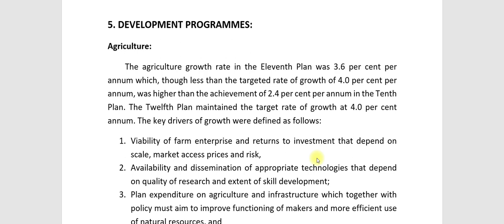Second: availability and dissemination of appropriate technologies, which depends on quality of research and extent of skill development. Third: plan expenditure on agriculture and infrastructure, which together with policy must aim to improve the functioning of markets and more efficient use of natural resources.